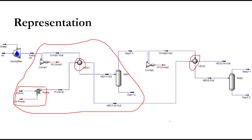This is the overall representation of the two-stage compression system that we will simulate in Aspen HYSYS. If you increase the number of stages, the set of compressor, heat exchanger, and separator will be further replicated. You may provide separate cooling water to each stage, or the cooling water outlet from heat exchanger one can be fed into heat exchanger two. Currently we are using the series cooling water arrangement as shown.